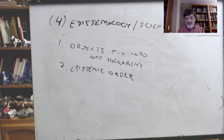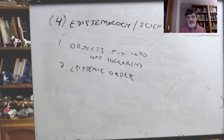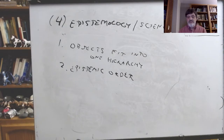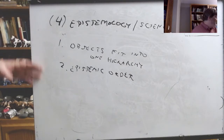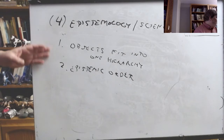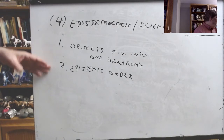That gets to the question of what's the purpose of the constructional system — why do this? It's not to settle once and for all what the hierarchy of different object types is. There must be some other purpose to showing that we can do these things with the objects of science.